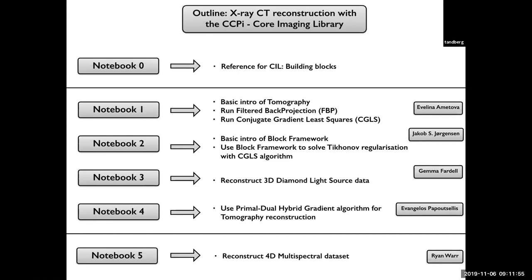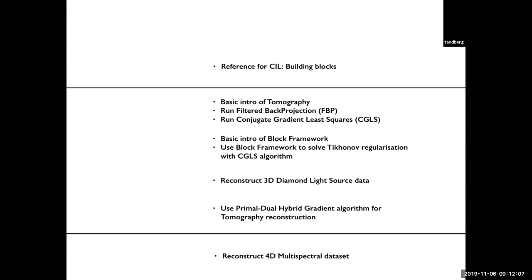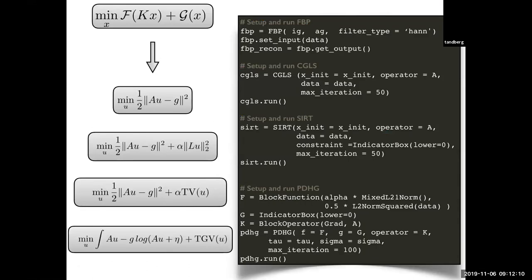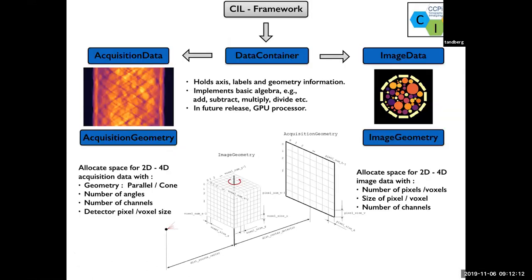So we have the four main demos, notebook one to two to four. The notebook zero is just a reference from CIL and explains how we build all these blocks here. And there are the acquisition data, image data and data containers.